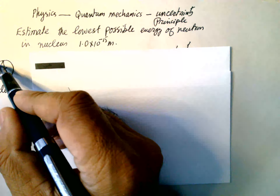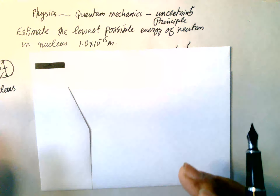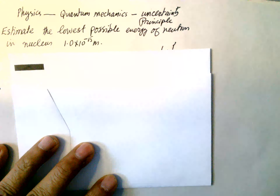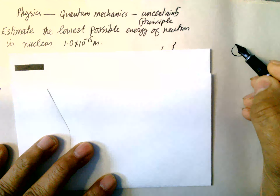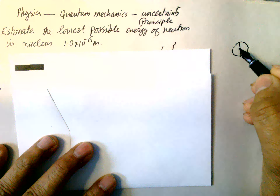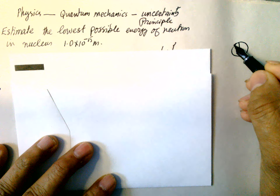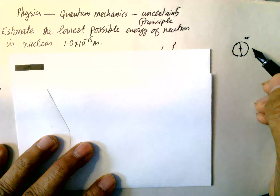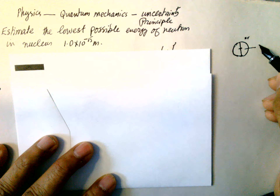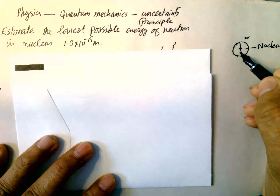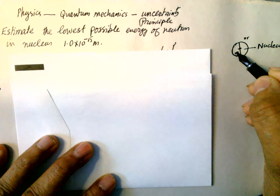Suppose this is a nucleus, and this is its diameter, 2R. Here is a neutron inside the nucleus.